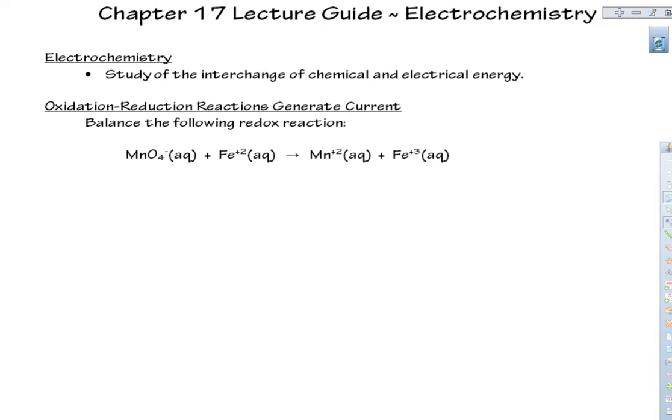Now we're going to look at an interchange between chemical and electrical energy. In order to conduct electric current, you need moving electrons. We have that in a redox reaction. Somebody's losing electrons, somebody's gaining electrons. In electrochemistry, we're going to force the electrons to move through a wire. These moving electrons should conduct an electric current.